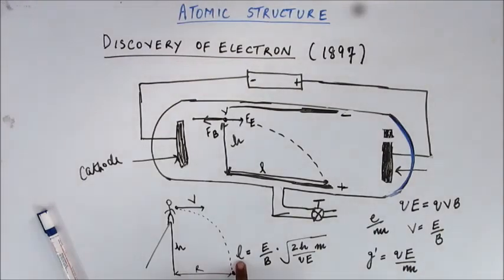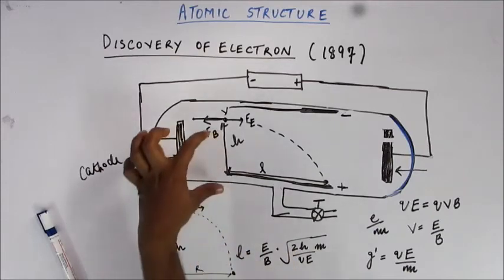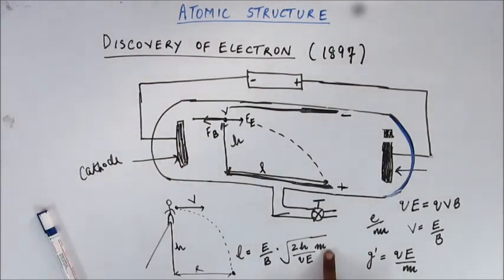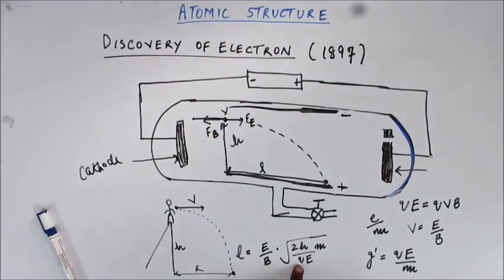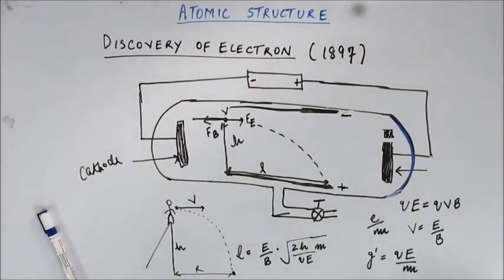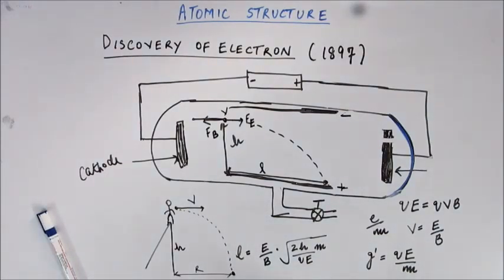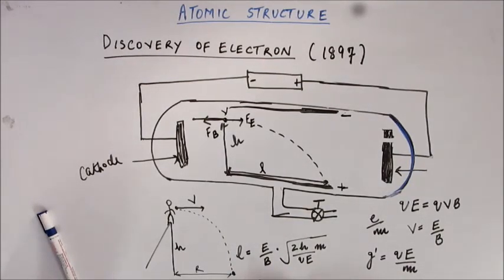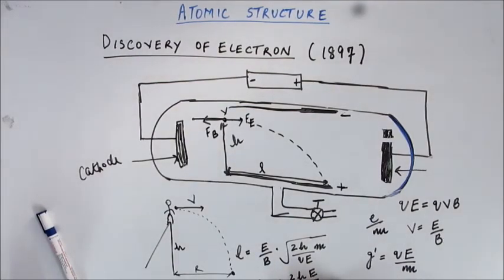So the distance L can be physically measured. L equals velocity - which is E upon B - multiplied by time, which is the square root of 2H divided by (electric force / m). Electric force is q times E, and m will move to the numerator. So L is physically measurable, electric field E and magnetic field B are known, height H can be physically measured - but the mass m of the particle is not known, and the charge q of the particle is not known. Everything else can be physically measured or is known, so from this equation we can find out q/m.